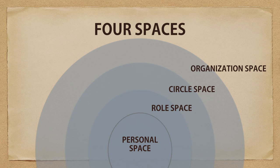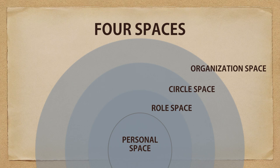The dark line around personal space means that when someone is asking you to do something in circle space, you have the right to say no if it violates your personal space. The requests you get in the organization are requests for roles — they're not usually requests for you personally. There are different levels of thinking that are useful in Holacracy, and at any one time you can be in one of these four mental spaces.